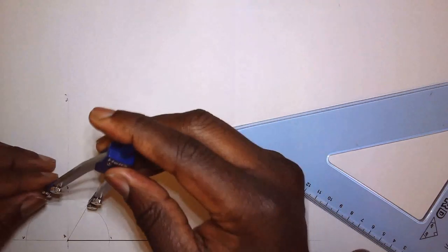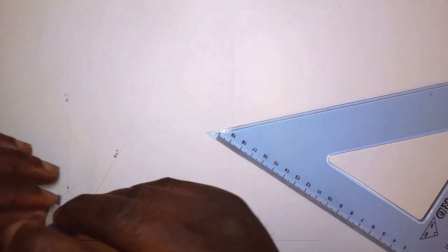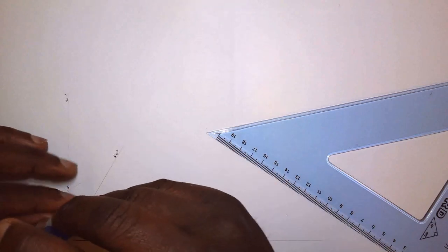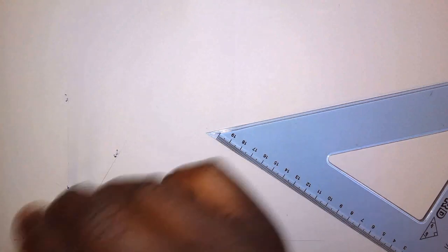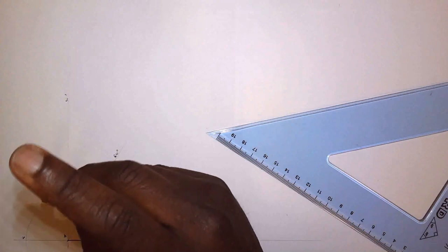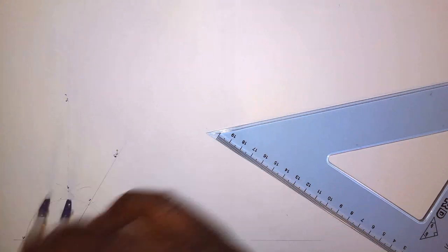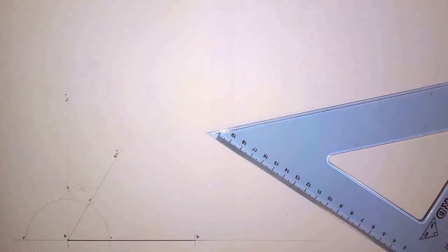So we're going to put our compass at 4 open beyond half the distance like so. I'm going to scribe an arc as shown. I'm going to stand at 3 scribe an arc to intersect the previous like so.